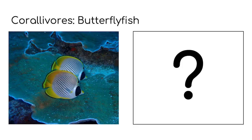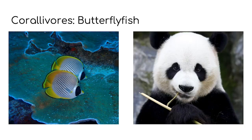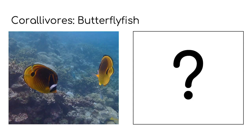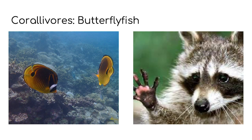The butterfly fish is already named after a butterfly, but some of the different species are also named after animals. This one has a big black spot over its eyes — this is a panda butterfly fish. Can you see the similarities? Both of them have big black splodges over their eyes. Now this one looks like it's wearing a bandit or a robber's mask — this one is a raccoon butterfly fish. It has black marks over its eyes and white eyebrows.